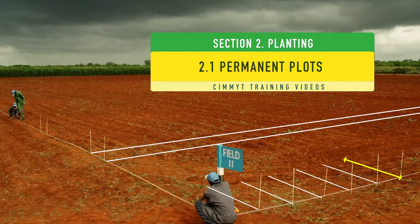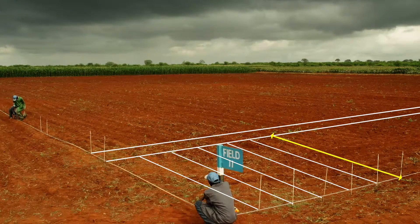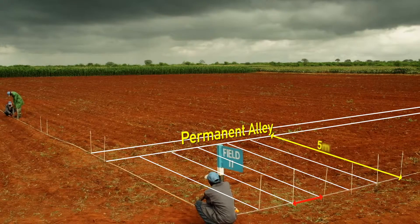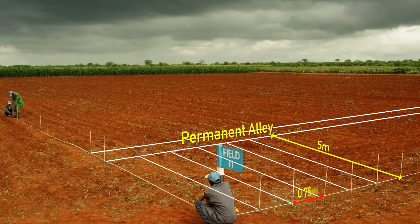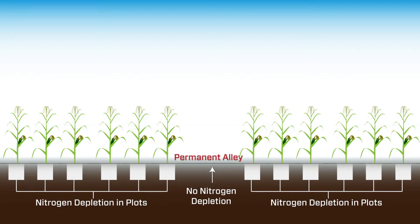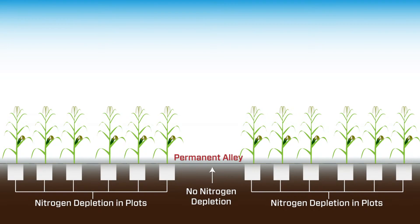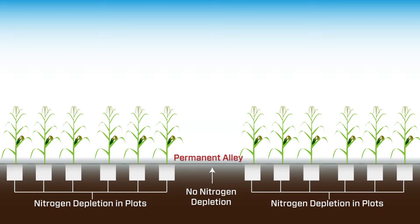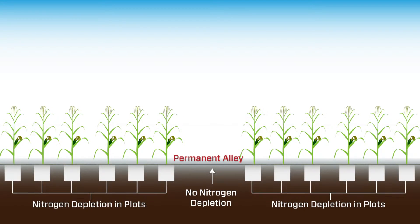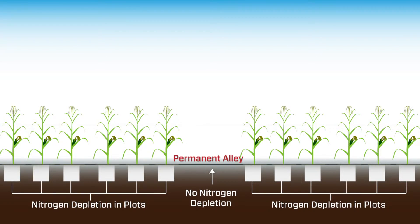Planting trials using marked permanent plots and alleys, as described in video one, will ensure that plots are maintained season after season. During the growing season, plants will remove nitrogen from the plots while the soil nitrogen level of the alleys will remain the same, thereby introducing variation into the field. Maintaining fixed plots and alleys over seasons will prevent planting over these differences in soil nitrogen content from the previous season.